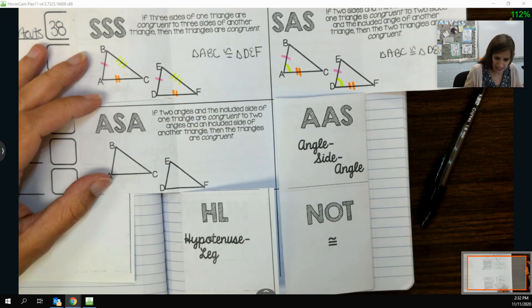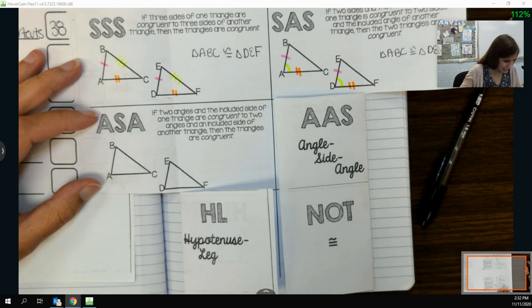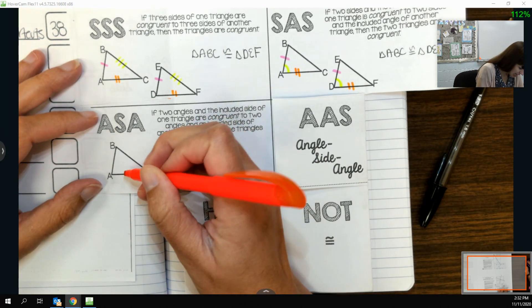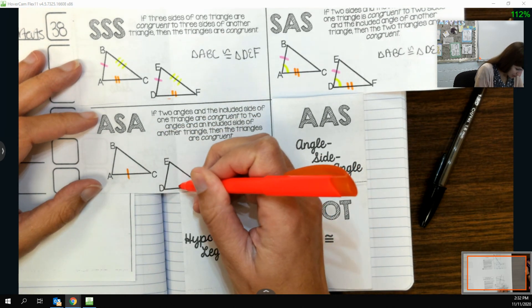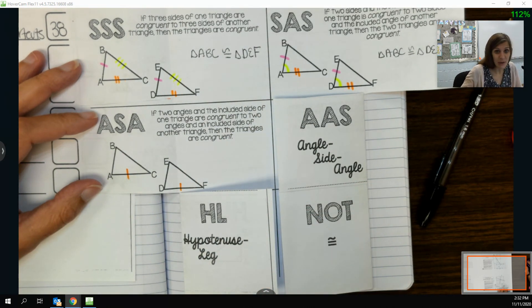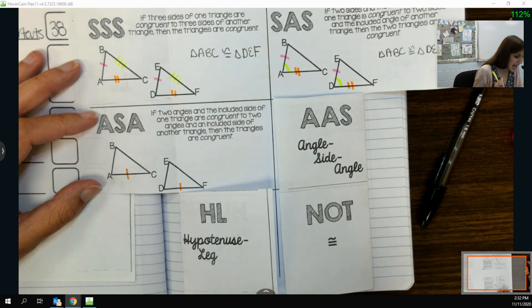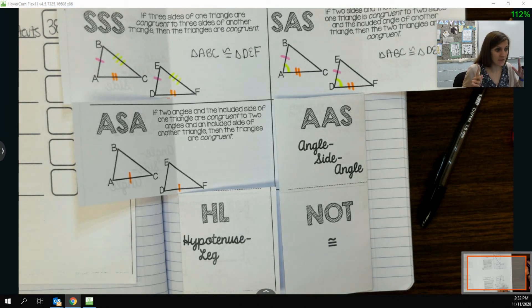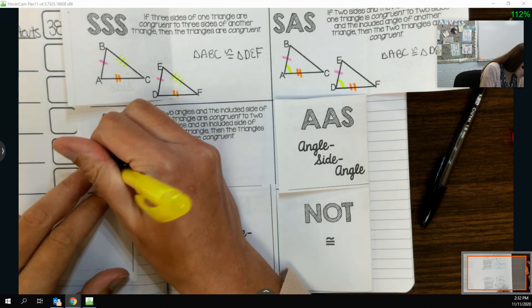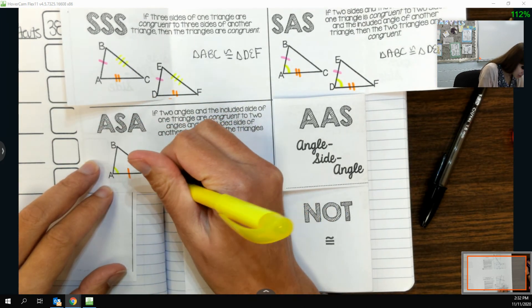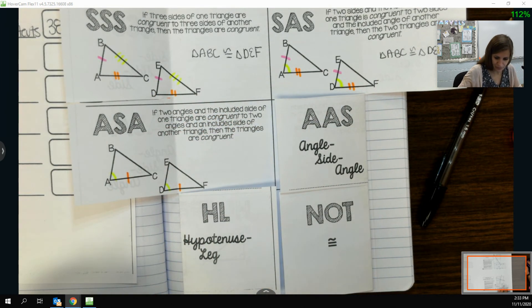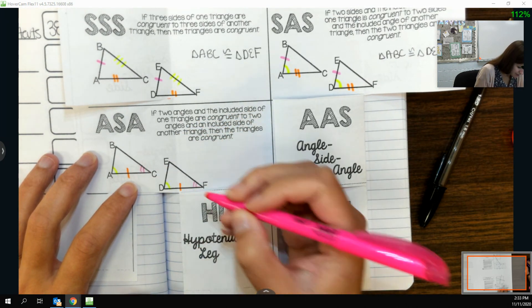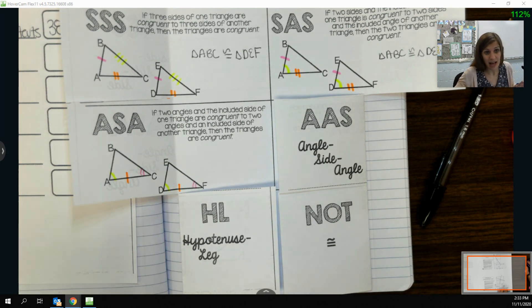Let's say, for instance, I knew that these two sides, so AC, was congruent to DF. If that were the case, I would have to know the two angles on either ends of that side. So I would need to know that A was congruent to D, and then that C was congruent to F. If that wasn't the case, I might have a different shortcut.